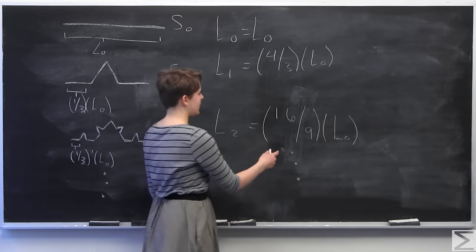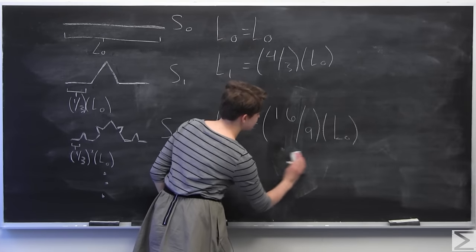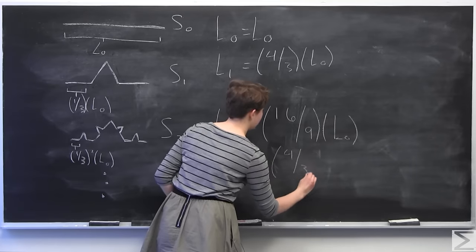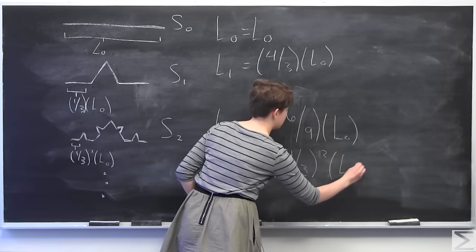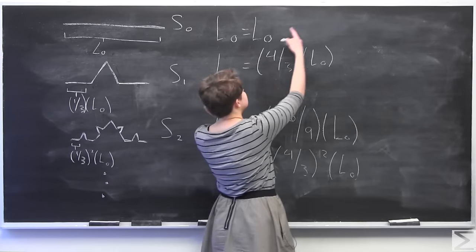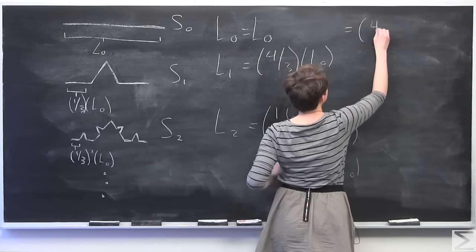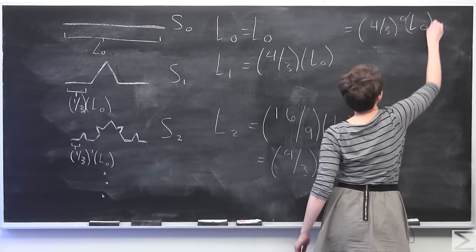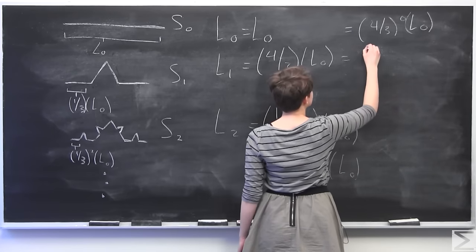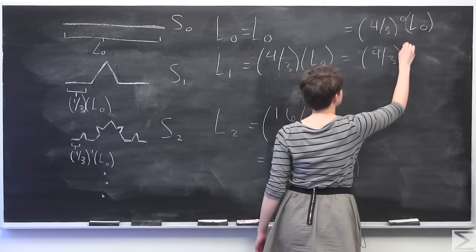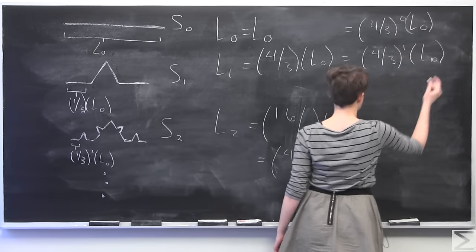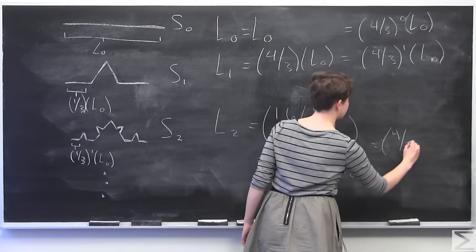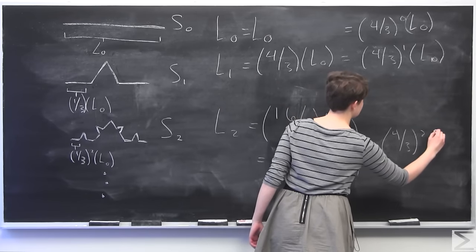And so we end up getting here, I mean, actually, as you can see here, 16 over 9 is actually equal to 4 thirds squared. So another way to look at this formula would be to say, okay, so we have here 4 thirds to the zero times L0, because anything to the zero is just one. And then we have here 4 thirds to the one L0. And then down here, we have 4 thirds squared. Just rewrite this here for clarity. 4 thirds squared times L0.